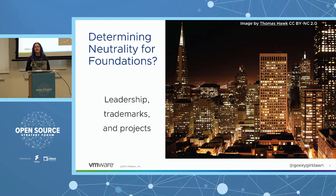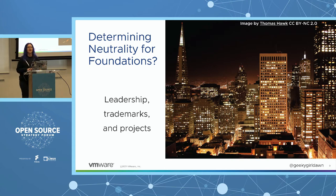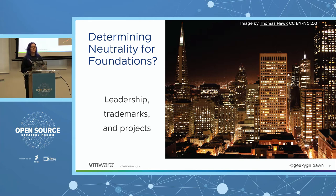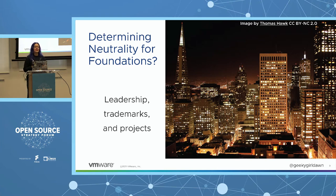One way to avoid these situations is by supporting projects under neutral foundations like the Linux Foundation whenever possible. However, it isn't always clear whether a foundation is neutral. If the board of directors or other leadership bodies are made up of people from a wide range of companies — especially competing companies — that's a good indication of neutrality. If board members are primarily from a single company or closely tied companies, it's likely not neutral. You can also look at who owns the trademarks and whether projects came from a single company or a variety. CNCF, the Linux Foundation, Eclipse, and the Apache Software Foundation are all neutral foundations.